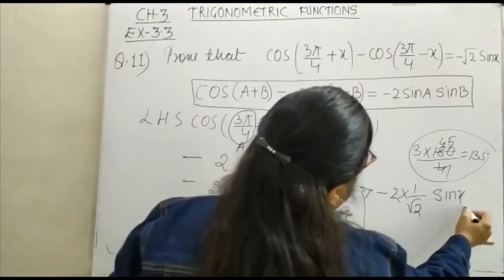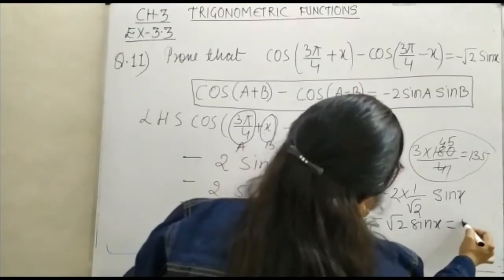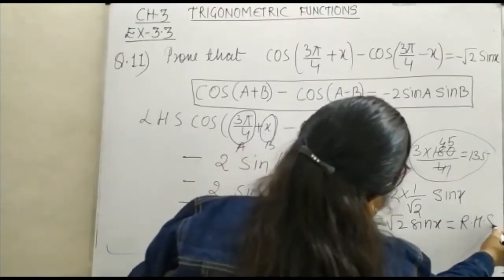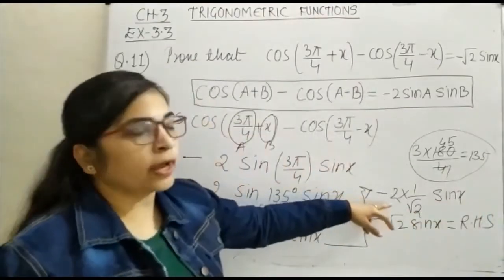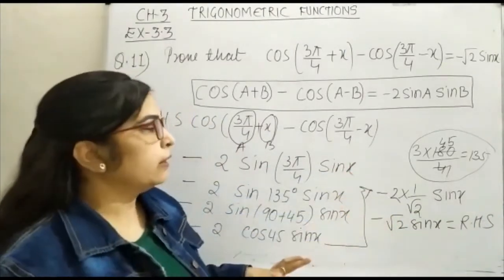Now this becomes minus √2 sin x and this is equal to your right hand side. Your 2 can be written as √2 times √2 and one √2 will be cancelled.